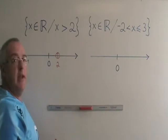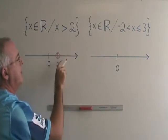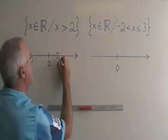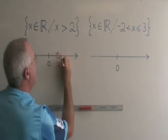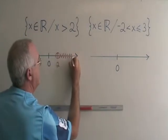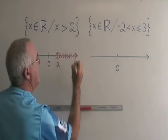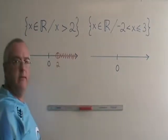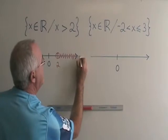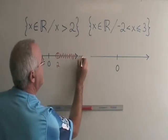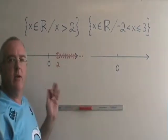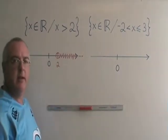The numbers greater than 2 are over here, so I shade to the right towards positive infinity, and then I put dots to indicate that it continues in that direction.